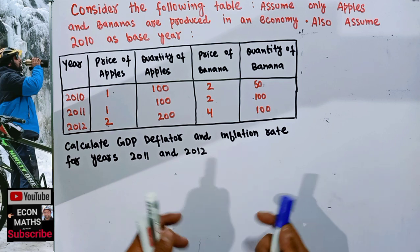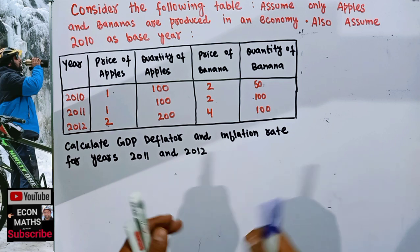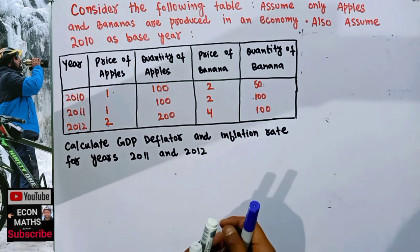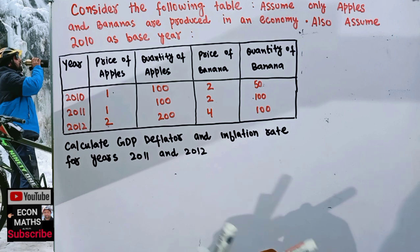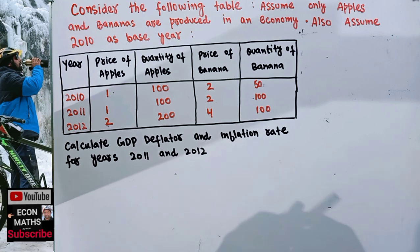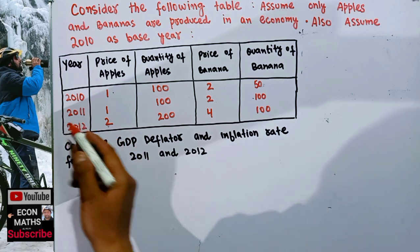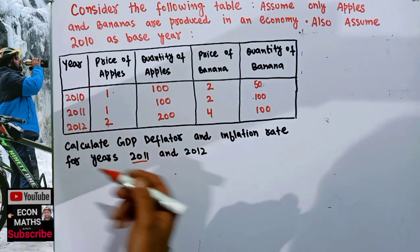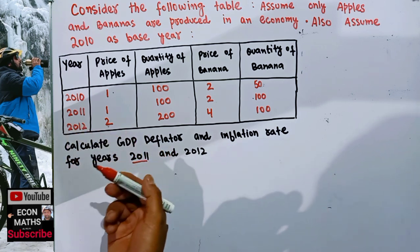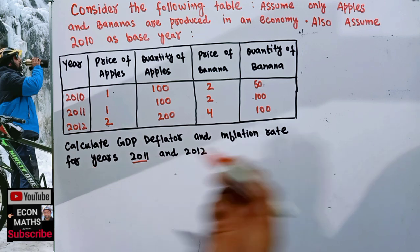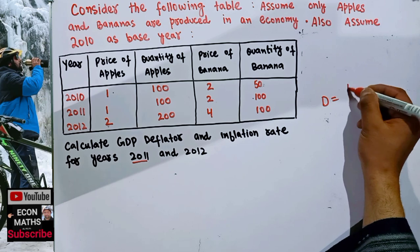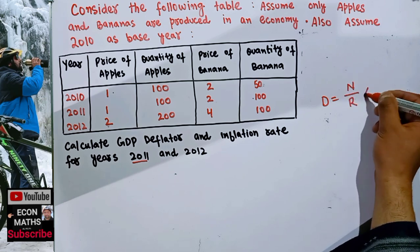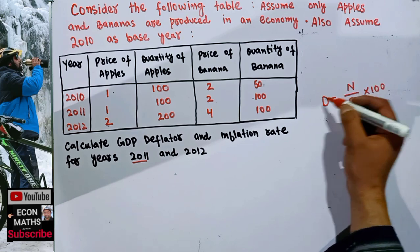The GDP deflator is also called the implicit price deflator, and it is used to measure inflation. It is used to determine the level of prices of newly domestically produced final goods and services in an economy in a given year. To calculate the GDP deflator, the formula is: GDP deflator equals nominal GDP divided by real GDP, times 100.